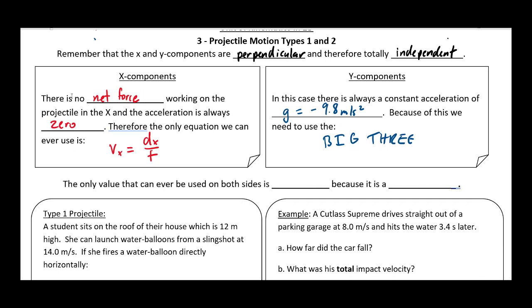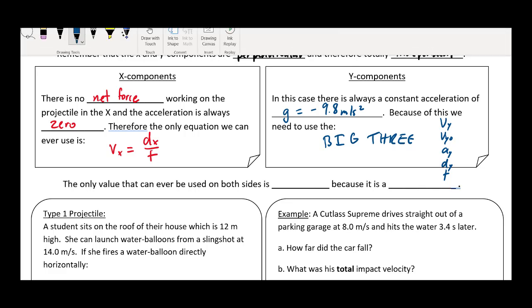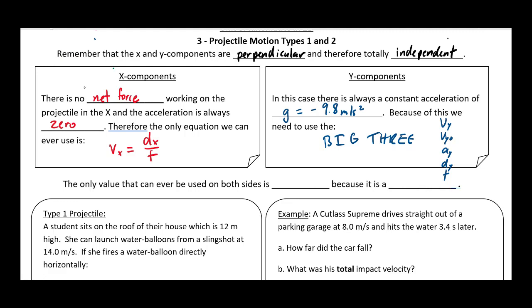You'll remember from the big three that we've got VY, VY0, AY, DY, and T. So we've got those five variables that keep coming up whenever we look at something that's accelerating. These first four are all vectors, so their direction is going to be super important. Because they're vectors, we can only talk about them in the Y direction. However, the one value we can use on both sides is time, and that is because time is a scalar. So if you know how long it's traveling in the X direction, you also know how long it's traveling in the Y direction and vice versa.